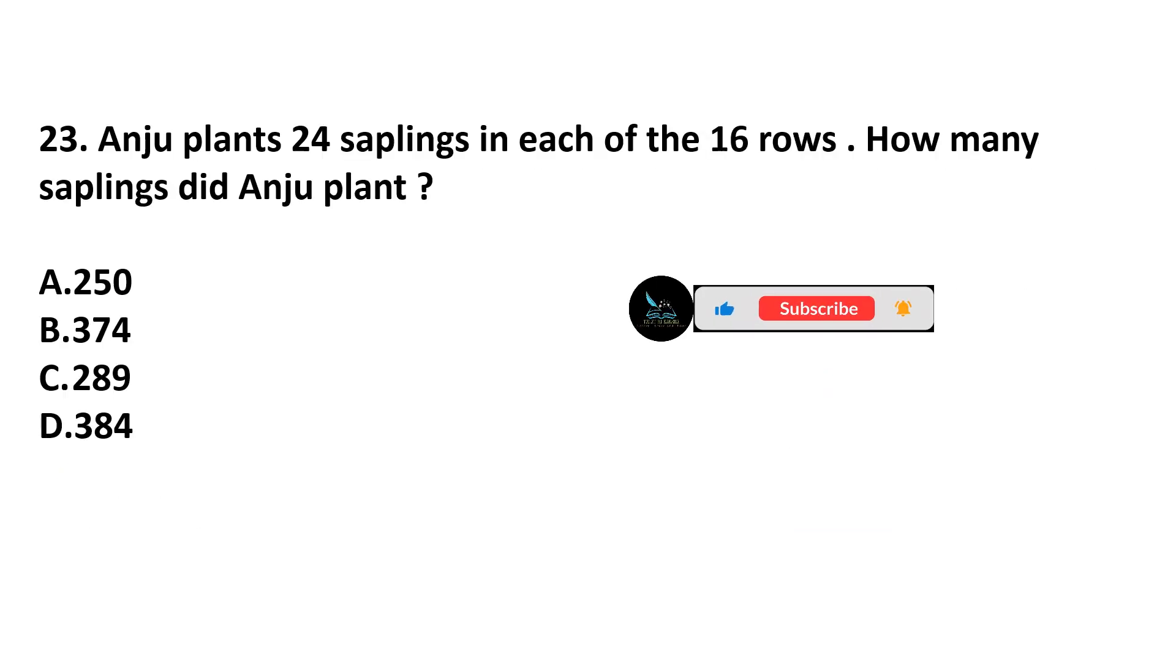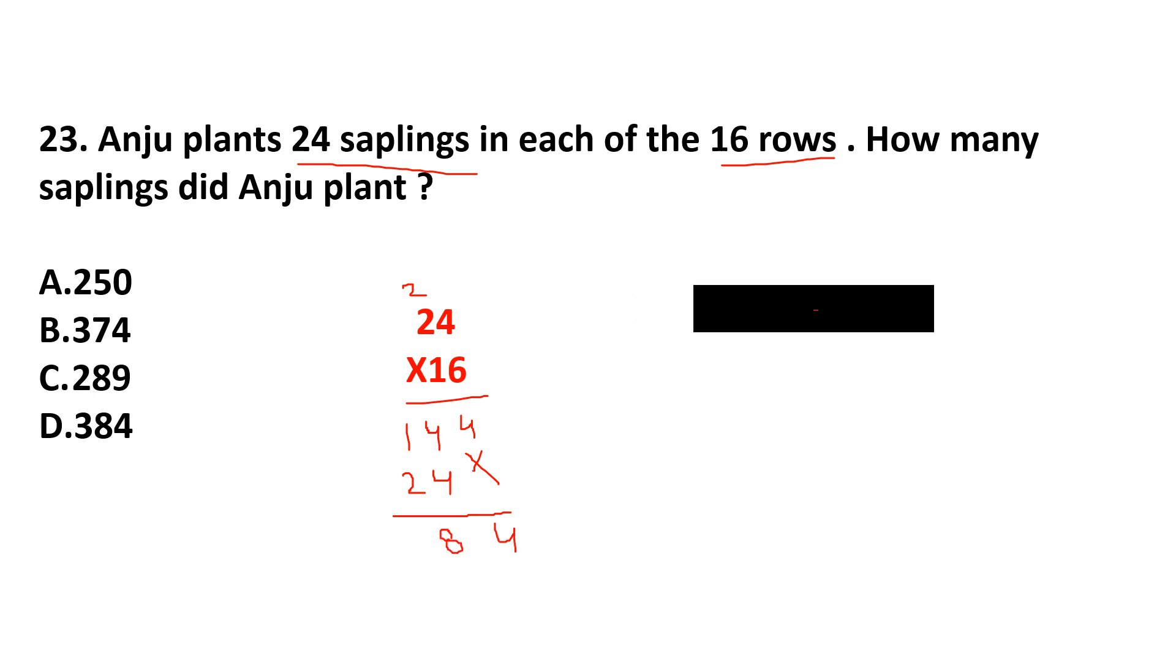Question number 23. Anju plants 24 saplings in each of the 16 rows. How many saplings did Anju plant? Given that he plants 24 saplings in 16 rows. Each row has 24 plants. That means, how many total plants are there? 24 multiplied by 16. 6 times 4 are 24. Carry over 2. 6 times 2 are 12, plus 2, 14. Here, 0. 1 times 4 are 4, and 1 times 2 are 2. This is 4, 8, and 3. So our answer is 384. Option D.